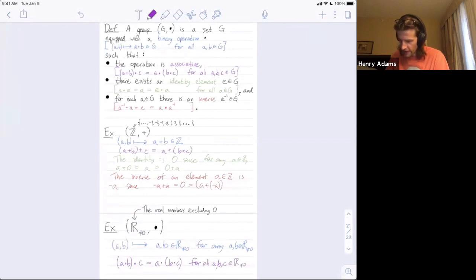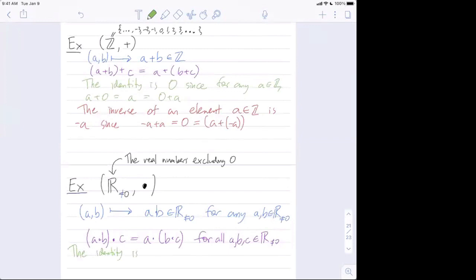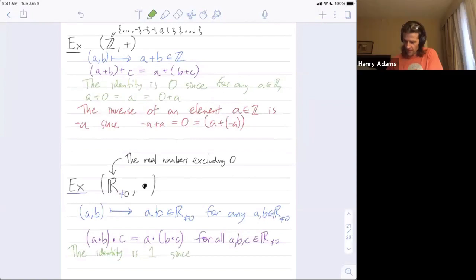What do you think the identity is? Anyone? One. One. Correct. That's since a times one is equal to a which is equal to one times a for all non-zero reals. Take any non-zero real number multiply by one and you don't change anything.